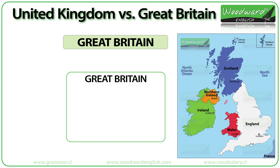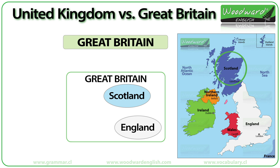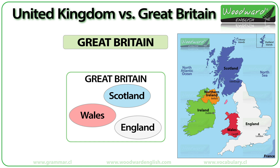Great Britain refers to the island that consists of England, Scotland and Wales. It is the largest island in Europe and the ninth largest in the world. In general, you can think of Great Britain as just the main island, though politically it includes nearby islands such as the Isle of Wight in the southern part and the Orkney Islands and Shetland Islands to the north.